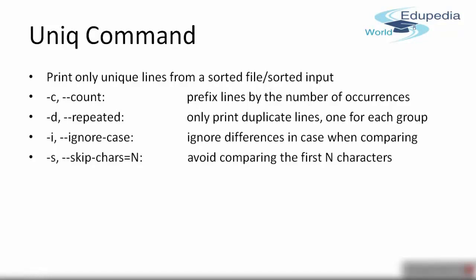The uniq command has various options. Hyphen -c gives you the count, prefixing each line by the number of occurrences. Hyphen -d prints only the duplicate lines — lines that occur more than once. Hyphen -i ignores case, treating capital and small letters the same. Hyphen -s skips the first n characters before comparing.